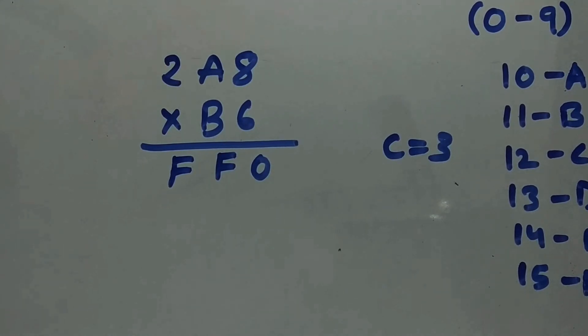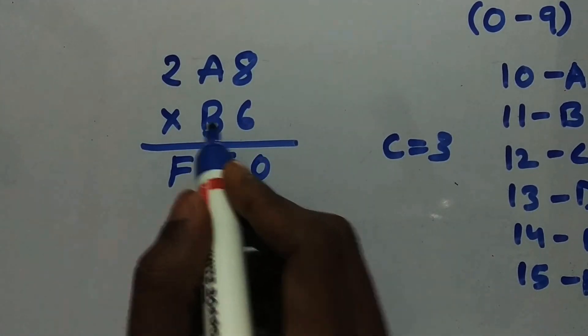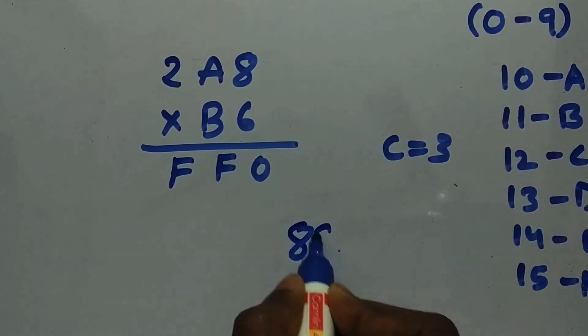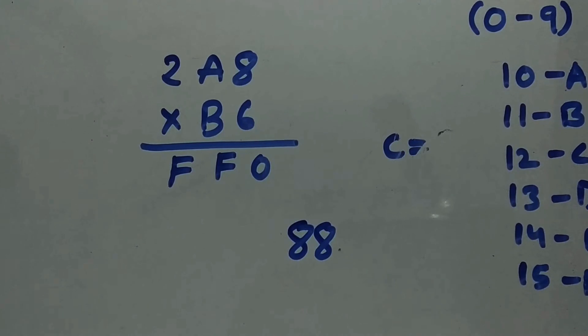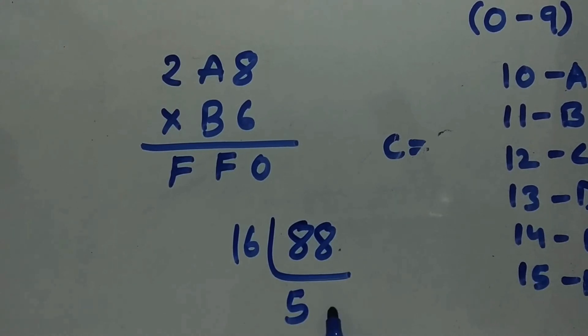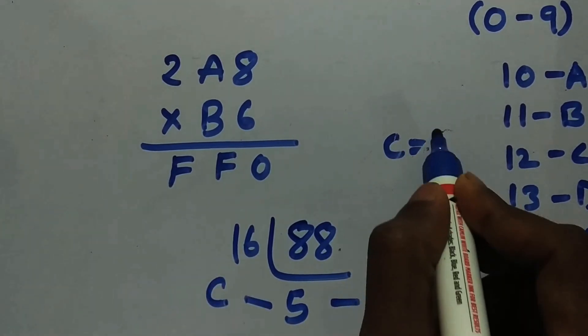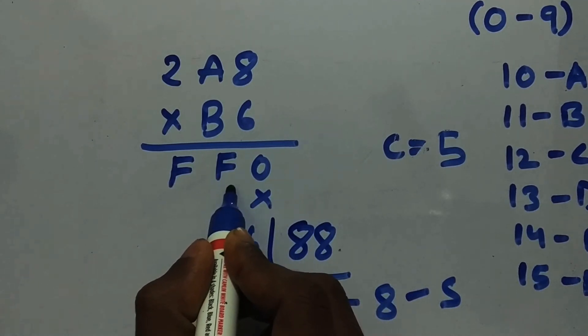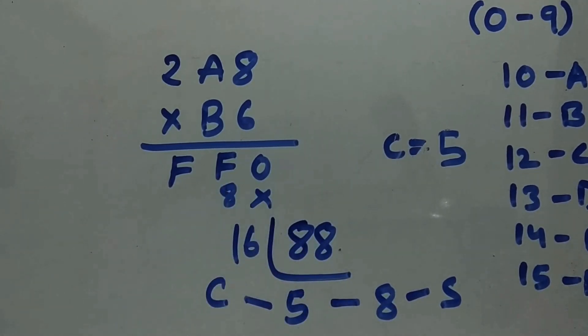Now we need to go for the B. B is 11. 11 into 8 is 88. 88 needs to be converted into base 16. 16 times 5 is 80 plus 8, so sum is 8 and carry is 5. We need to move 1 bit, so 8 is over here and carry is over here.